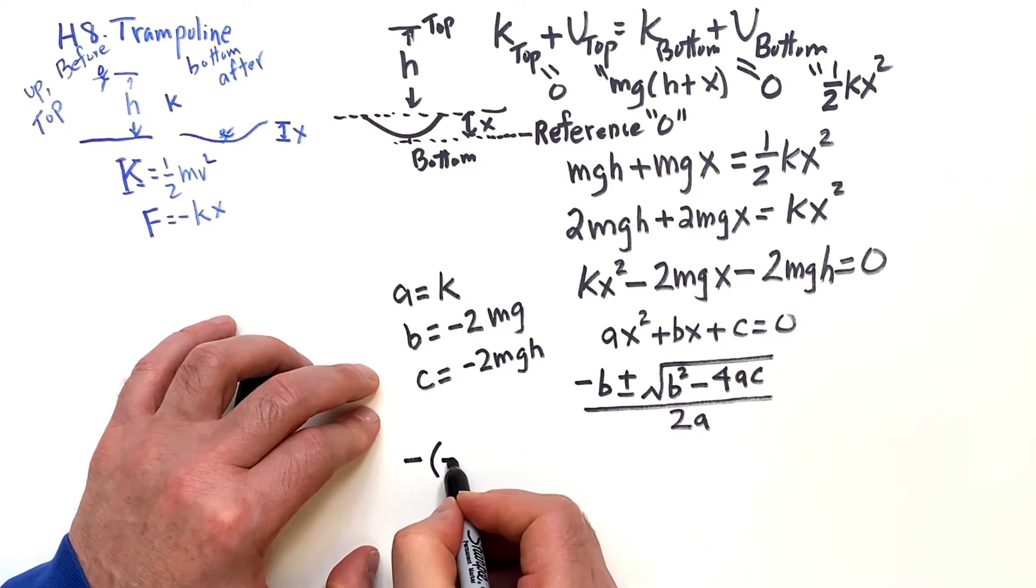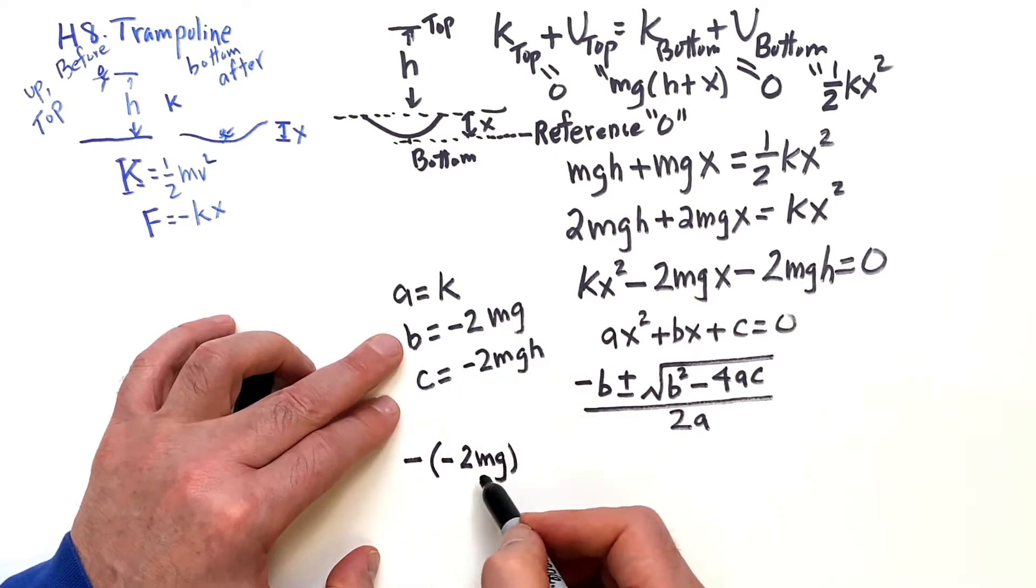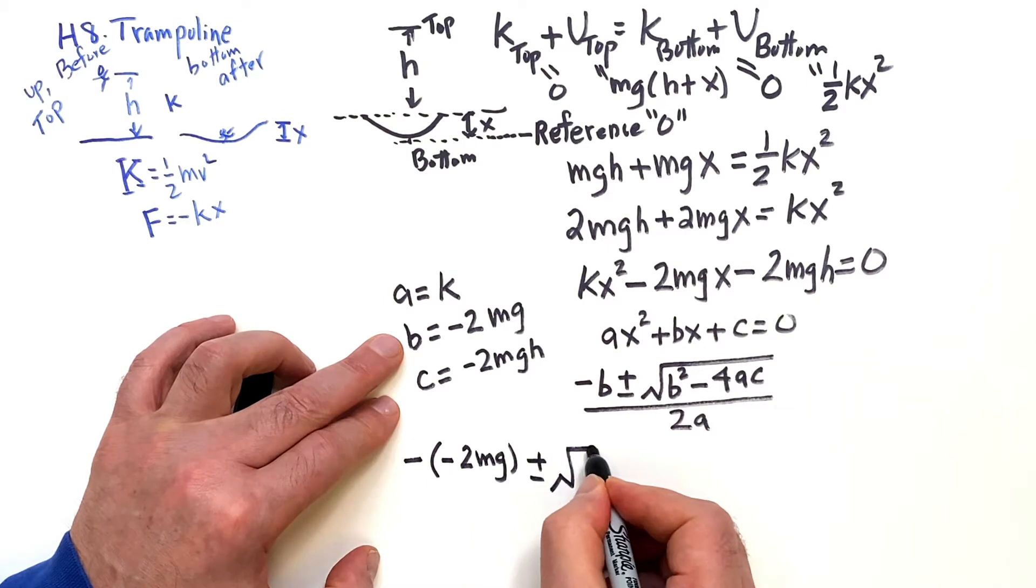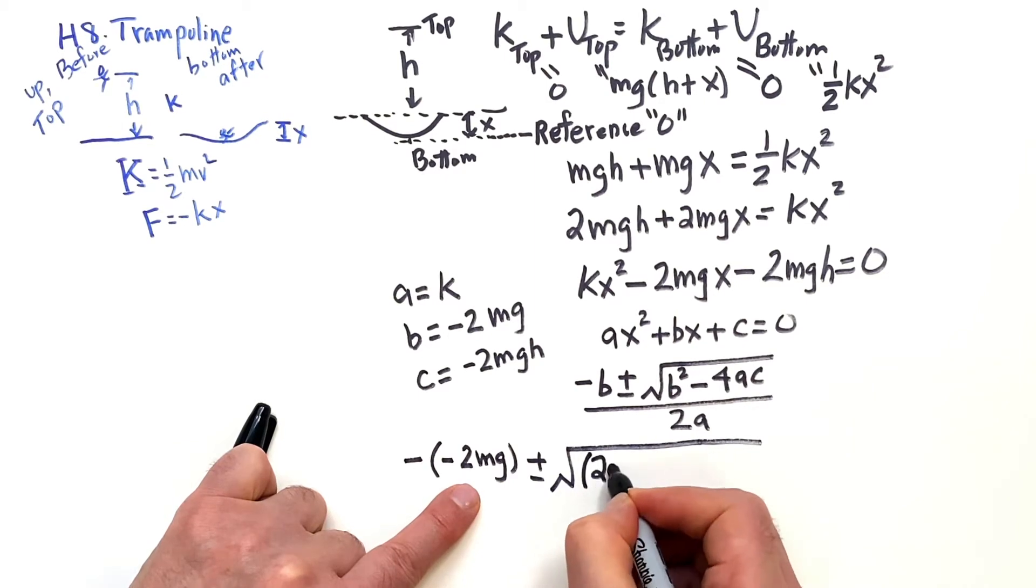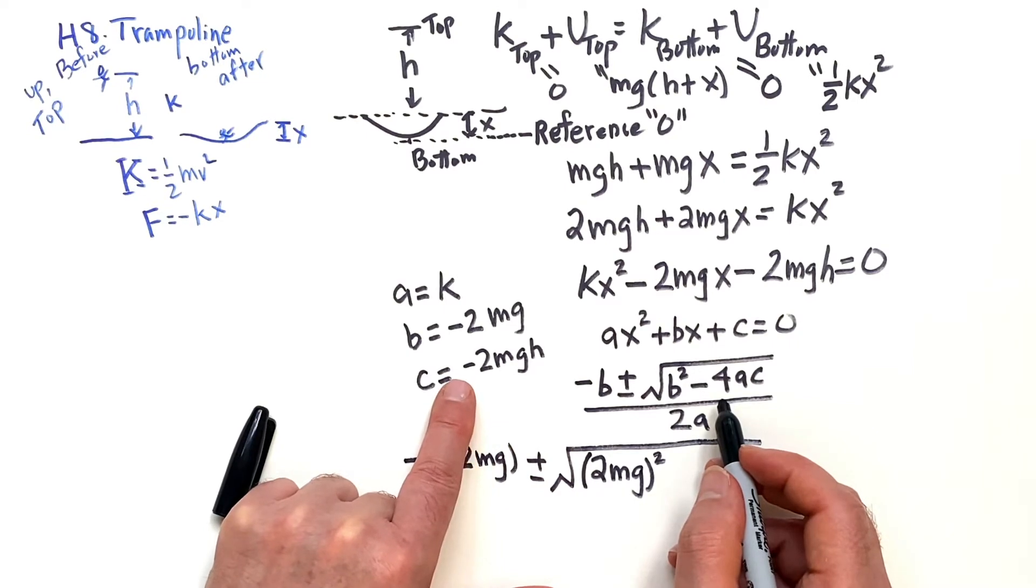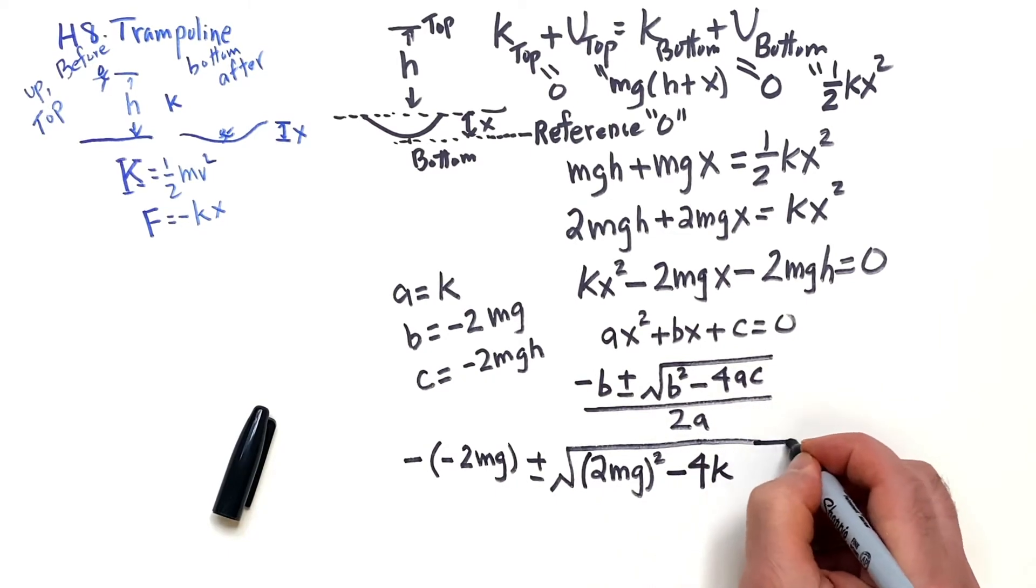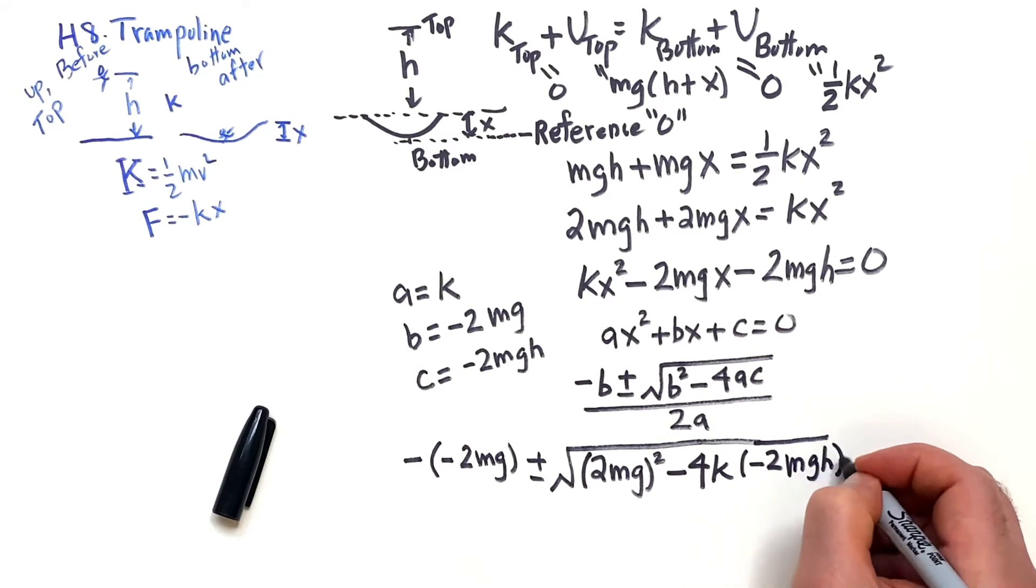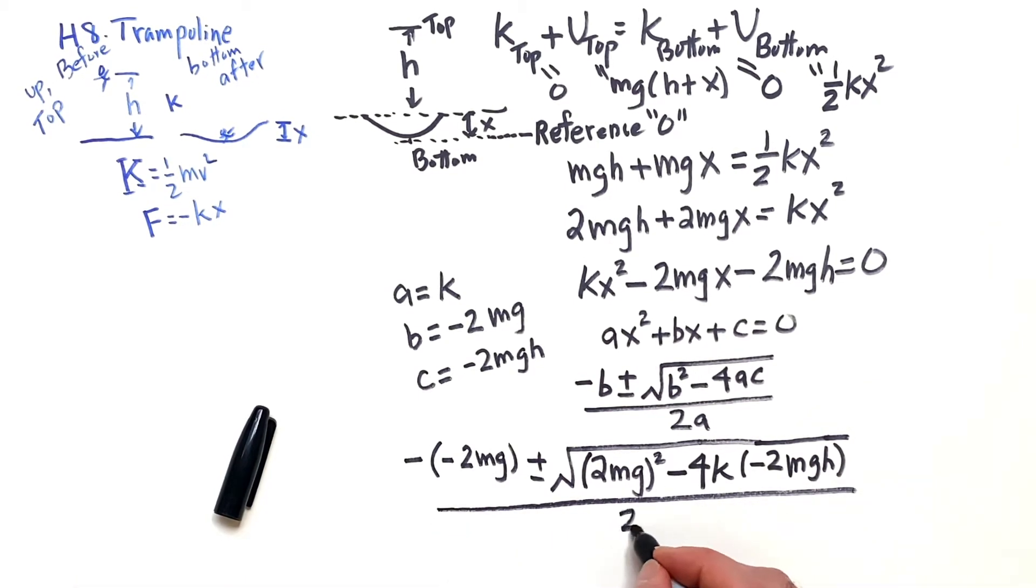And now we're going to apply this formula. So we have minus minus 2mg, that's your minus b. And then plus or minus, we're going to be squaring this thing. So this will be 2mg squared. The minus sign squared is going to just be plus 1. And then when we subtract here, we're going to have minus 4, and the a is k, and the c is minus 2mgh. And that's all going to be over 2k.